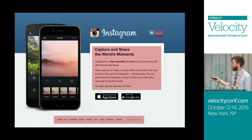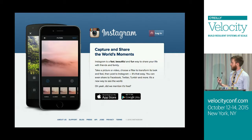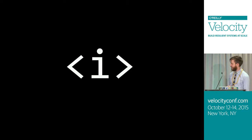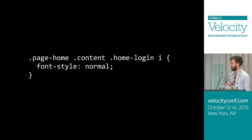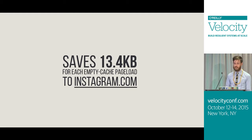Looking at the rendered page you can see bold and normal text, but there isn't actually any italic content being displayed — yet the italic font is downloading. Looking at the source code, it turns out the home icon is actually italic, using an `<i>` element. All they'd need to do is overwrite that to font-style normal, and it would save them about 13.4 kilobytes per page load.